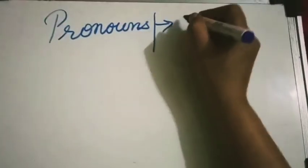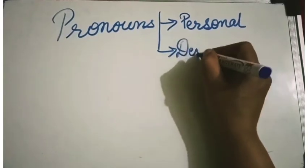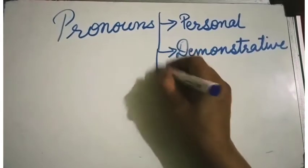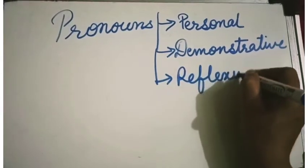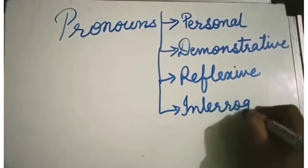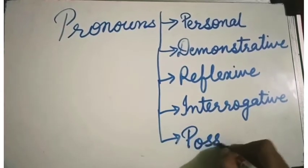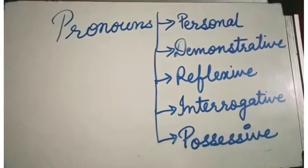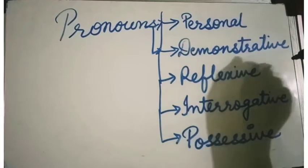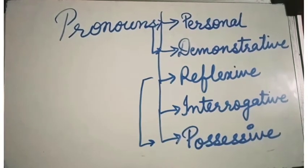The five categories are: first, personal pronoun; second, demonstrative pronoun; third, reflexive pronoun; fourth, interrogative pronoun; and fifth, possessive pronoun. Today's lesson will cover only two types: personal pronouns and demonstrative pronouns. The rest will be covered in the next lesson.